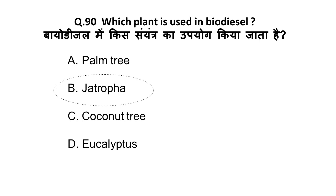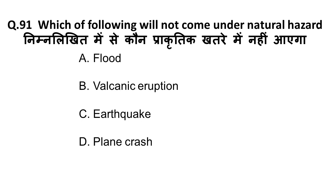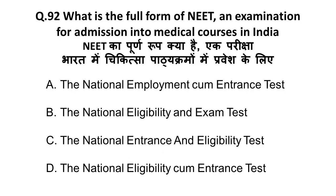Next question: which of the following will NOT come under natural hazard? Flood is a natural hazard, volcanic eruption is a natural hazard, earthquake is a natural hazard. A plane crash — which can be due to technical failure or human error — does not come under natural hazard. So the correct answer is plane crash.